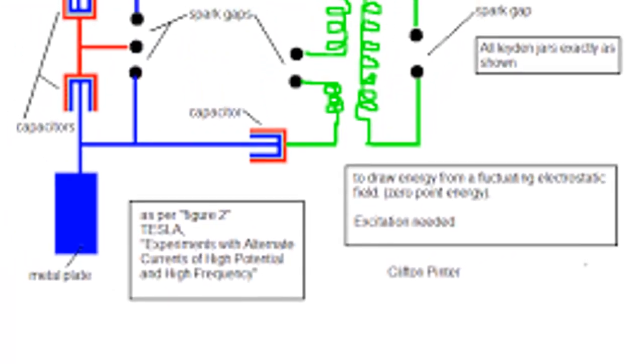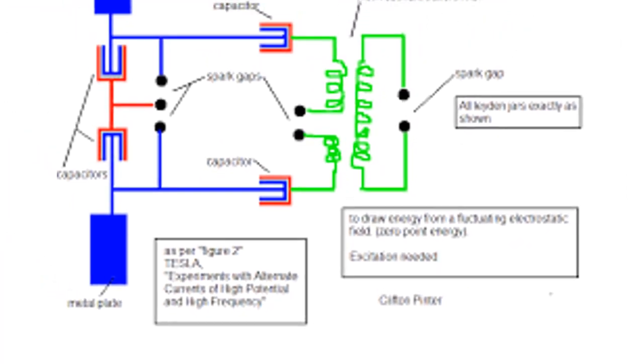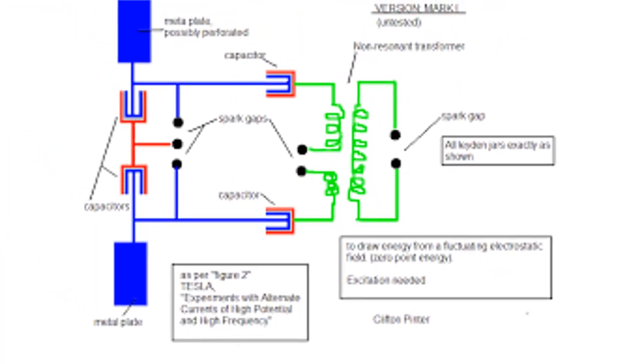When current is applied to the coil, it creates a magnetic field. The magnetic field interacts with the electric field to create radiant energy.